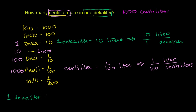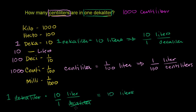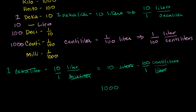Let's do it the dimensional analysis way. Starting with 1 decaliter, we want to convert to liters, so we put decaliter in the denominator: 10 liters per 1 decaliter. The decaliters cancel, leaving 10 liters. Now to convert to centiliters, put liters in the denominator: 100 centiliters per 1 liter. The liters cancel, and 10 times 100 gives 1,000 centiliters. And we are done.